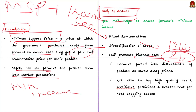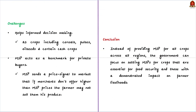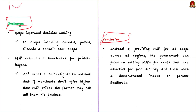Thirdly, MSP prevents distressed sale. Farmers rarely have surplus savings for buying inputs for the next cropping season, and access to credit is difficult for small and marginal farmers. So they are forced into distressed sale of produce at throwaway prices and cannot buy quality seeds, fertilizer, pesticides, or tractor rent for the next season, further decreasing income. MSP prevents this debt trap cycle.